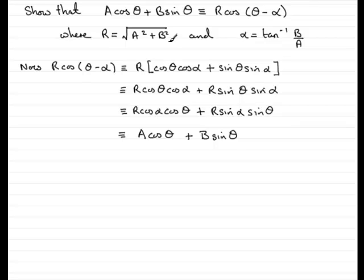What I need to do now is just show you that R is equal to square root of A² plus B² and α is the inverse tan of B over A. And to do that, what I do is I compare the two parts. You can see that A compares to R cos α and B compares to R sin α. So, let's just write that over here.